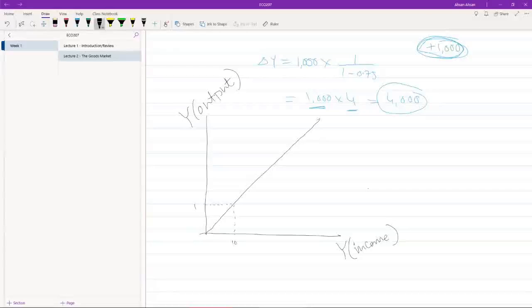So this curve will look like this, where all these points are the same. If this is 10, this is 10; if this is 80, this is 80, and so on. So this is basically a 45 degree line.